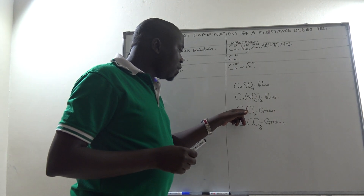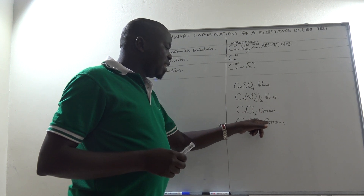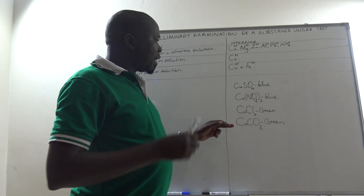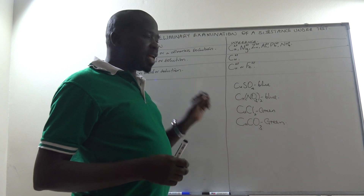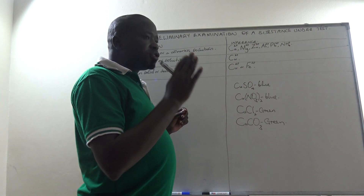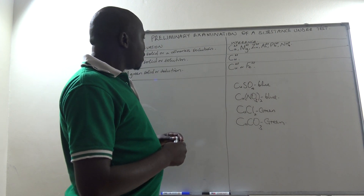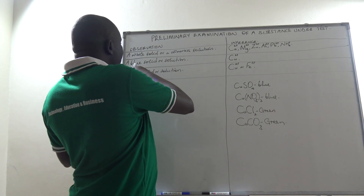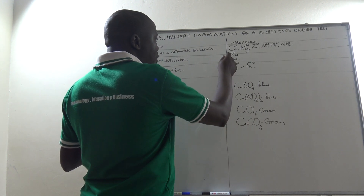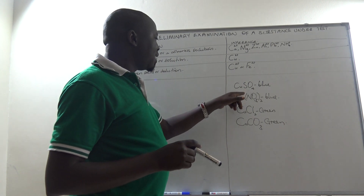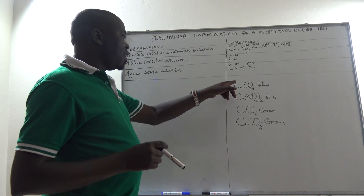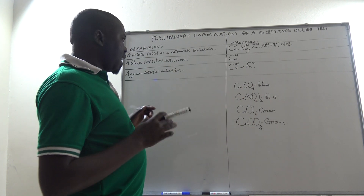Because copper two chloride and copper two carbonate are green in color, you may not know exactly which one has been given to you. But if it is green, just know there is either copper two ion or iron two ion. If your substance is a blue solid or solution, just know there might be copper two ion — at O-level, only copper two ion salts give a blue color.